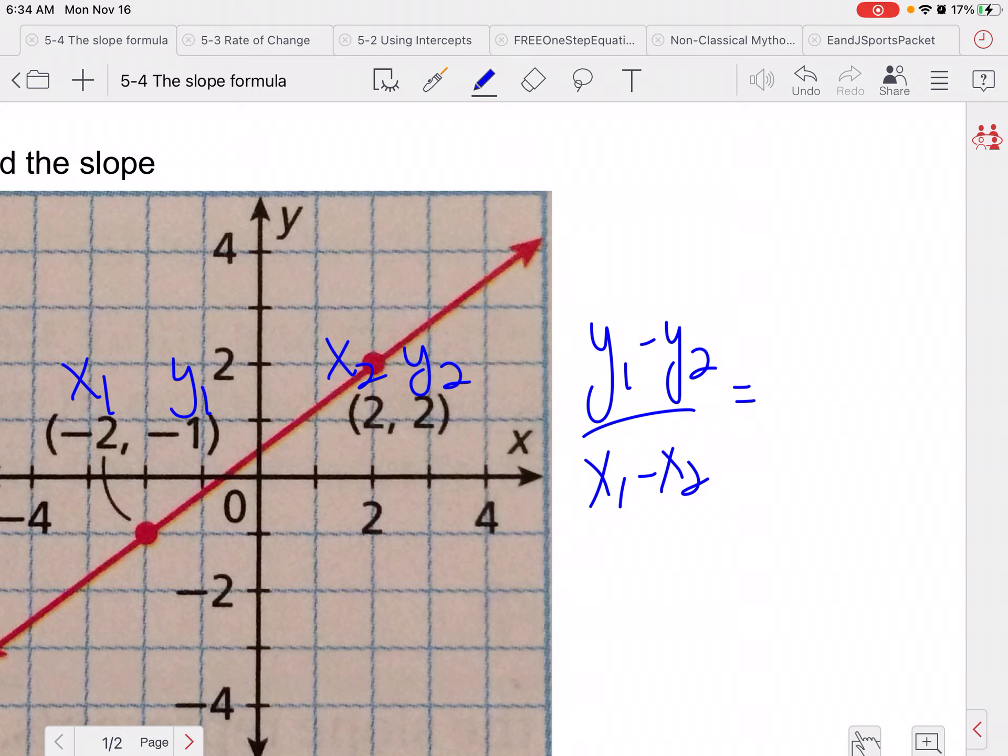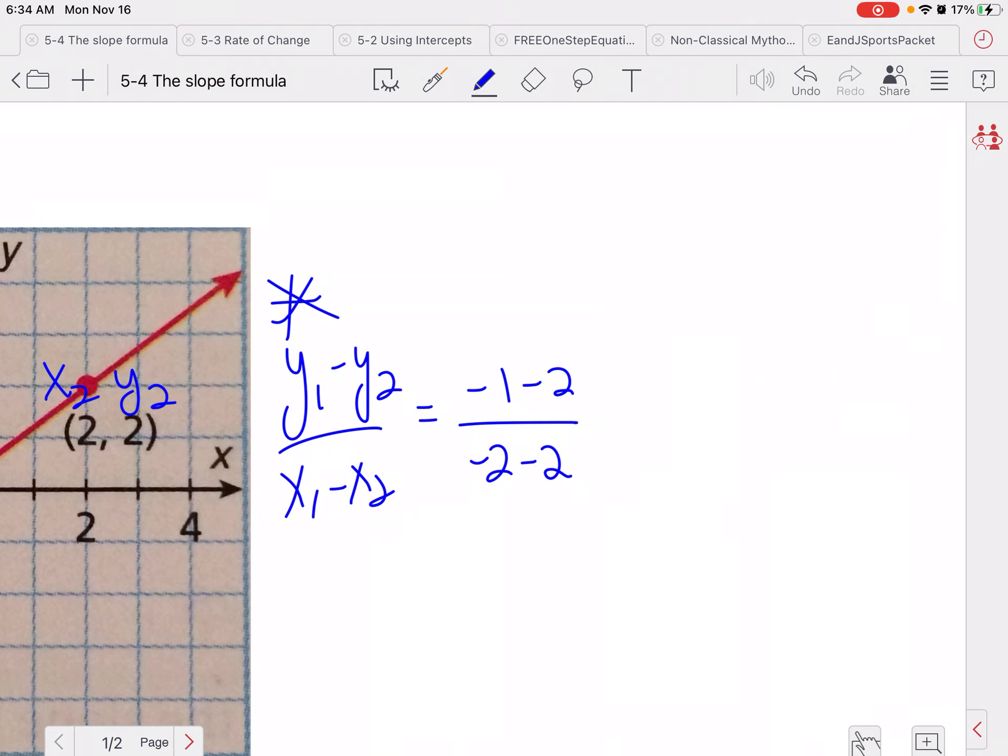So I would have y1 minus y2 over x1 minus x2. So you should have this formula memorized. So if you keep saying it every time you do your problem, that will help. So we'll have negative 1 minus 2 over negative 2 minus 2. So negative 1 minus 2 is going to be negative 3. Negative 2 minus 2 would be negative 4. A negative over a negative becomes a positive. So my slope is three-fourths.